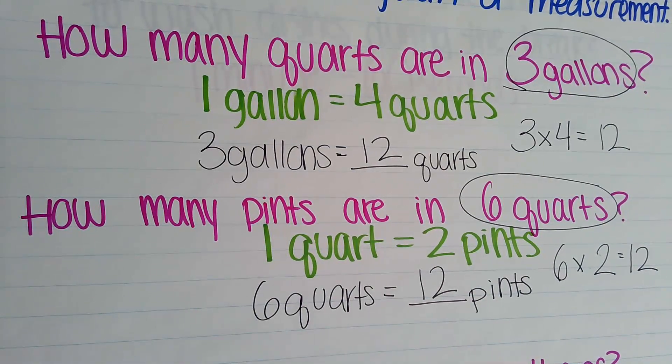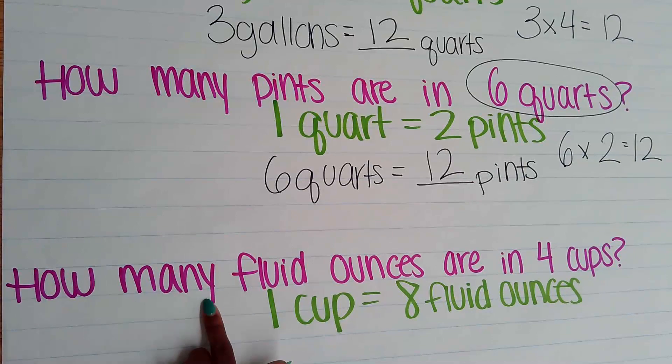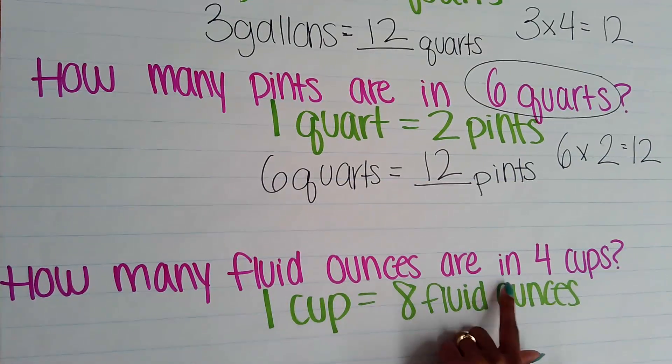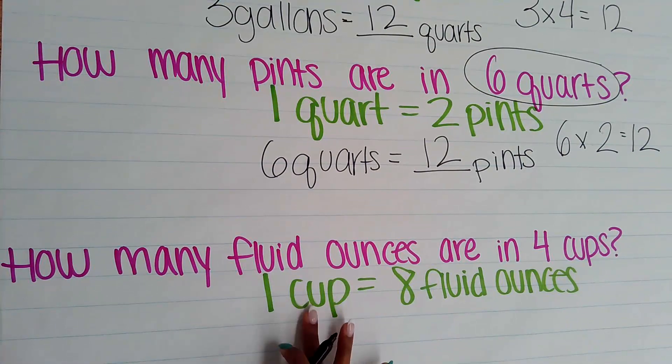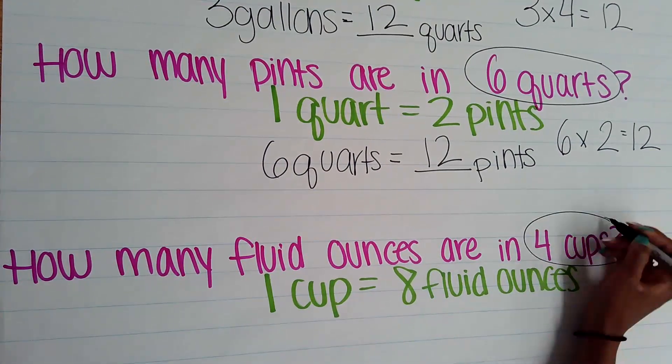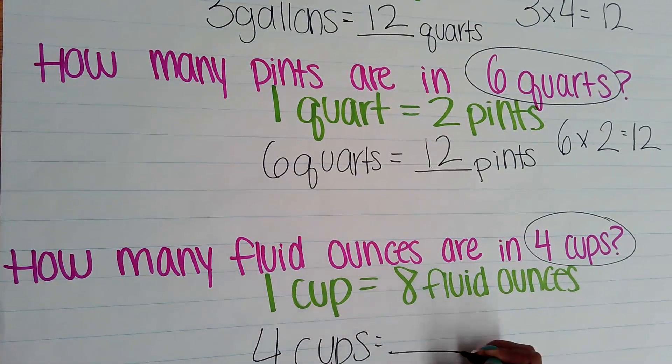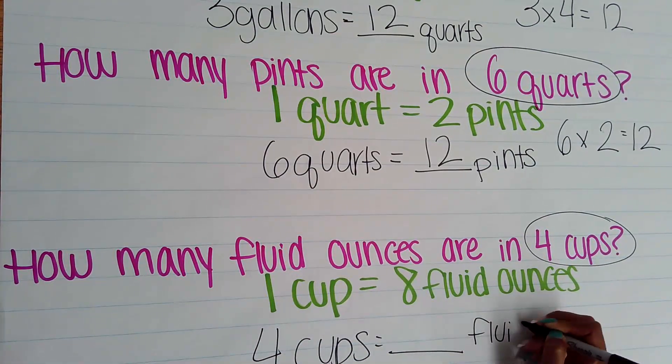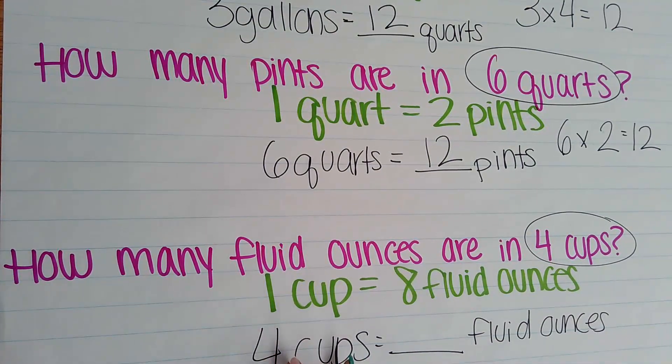Our last example: how many fluid ounces are in four cups? I have initial conversion of 1 cup equals 8 fluid ounces. I'm starting with 4 cups. Four cups equals how many fluid ounces? Again, I have four times as many as our initial conversion.